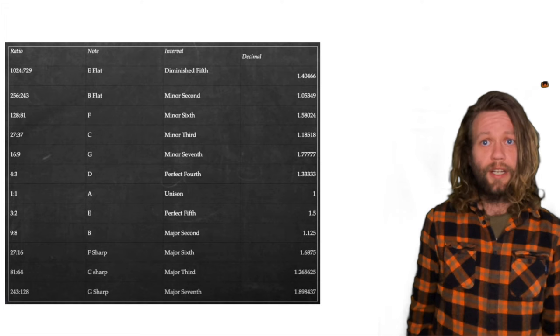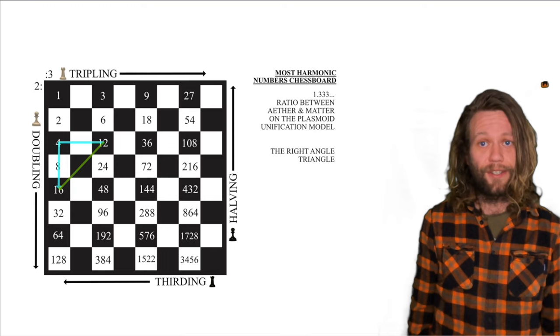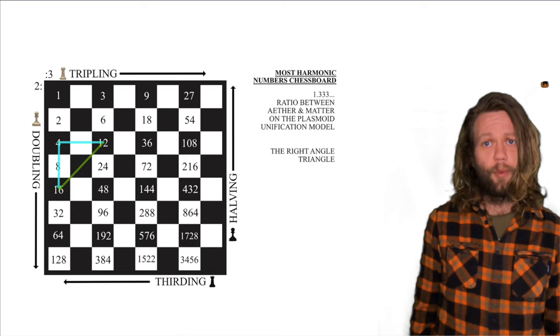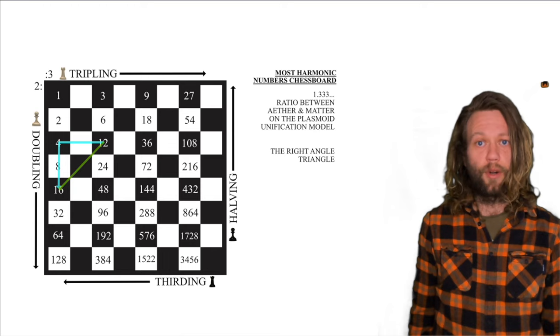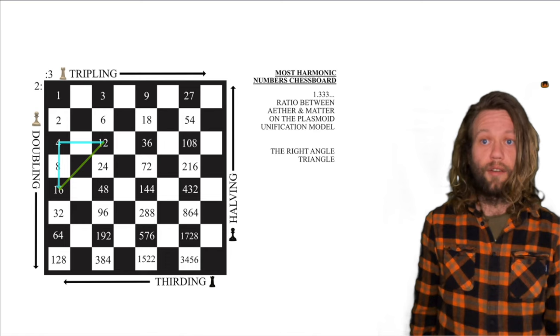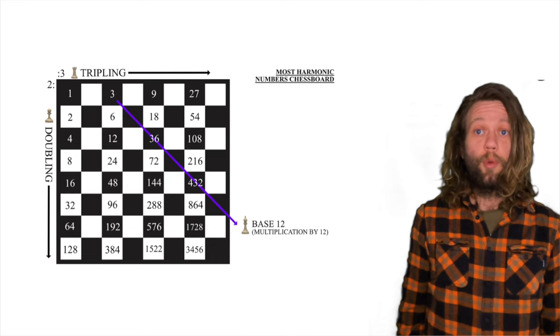We can also discover an important cornerstone of sacred geometry, the right angled triangle, demonstrated here showing the relationship between 12 and 16 which is stated to represent ether and matter respectively in the plasmoid unification model. The relationship between 12 and 16 demonstrates a perfect fourth harmonic interval at a ratio of four to three or a decimal ratio of 1.333. It's a repeating number.